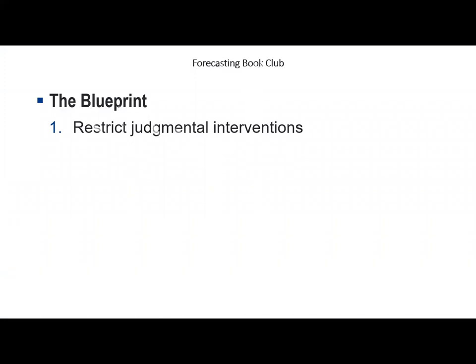Guideline one: restrict judgmental interventions to circumstances where you have reliable information about a forthcoming event that is likely to have a big effect on sales and has not already been factored into the forecast. Paul suggests documenting the reasons for making a change. I personally feel that while you won't go back and review the reasons, forcing people to document is valuable because it discourages wasting time on small or unimportant adjustments — if it takes effort to make an adjustment, you'll only make it for good reason.